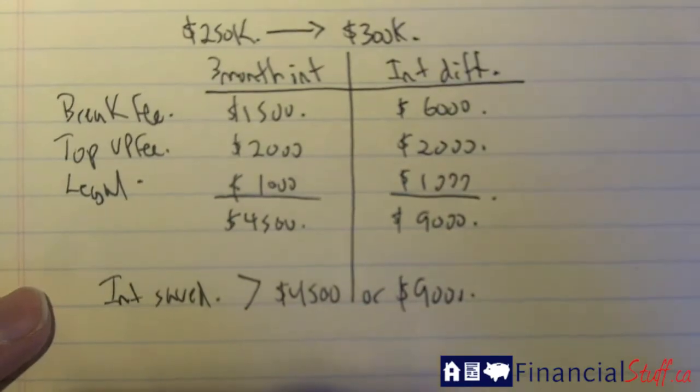The key with refinancing with CMHC is really to determine the break fee. Is it going to be a three-month interest penalty, or is it going to be the interest differential? Then, what you need to do is calculate the interest that you're going to save from your new mortgage versus your current, versus what your total fees to break those mortgages are.